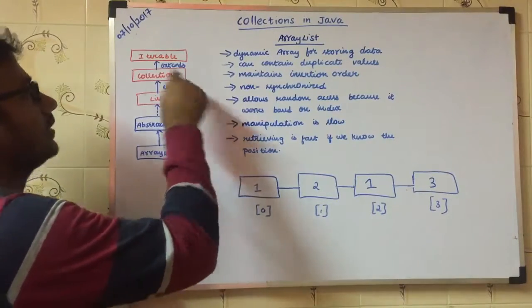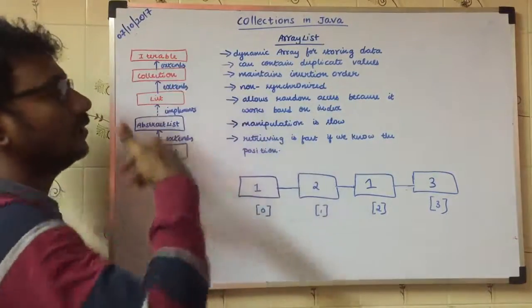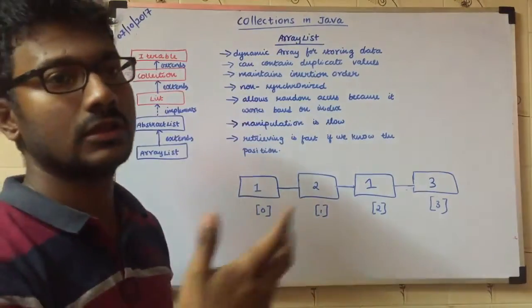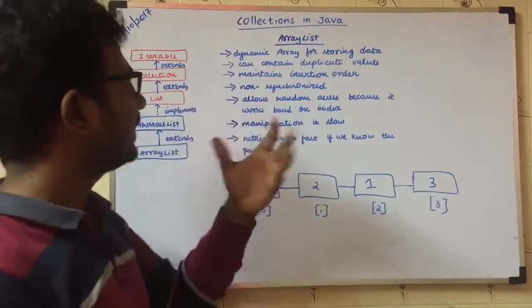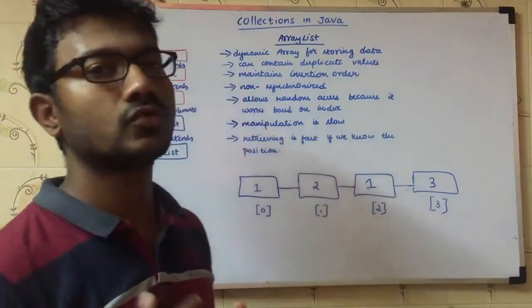This is a flow diagram and interface class implemented ArrayList. ArrayList is a dynamic array to store the data.